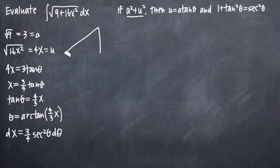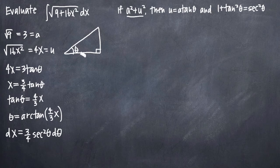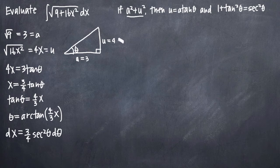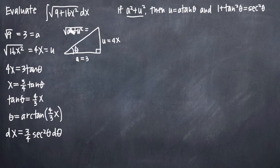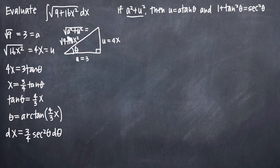That's all the setup we need outside of sketching our right triangle. Whenever we have a trigonometric substitution problem, it's helpful to have the right triangle for the end of the problem. We draw the triangle with angle theta, where the adjacent side is a — in our case 3 — the opposite side is u — in our case 4x — and the hypotenuse is the square root of a squared plus u squared, which is the square root of 9 plus 16x squared.